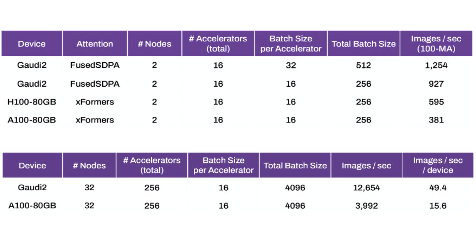Unlike the H100, which is a superscalar CUDA plus Tensor Core GPU, the Gaudi 2 is purpose-built to accelerate generative AI and LLMs.